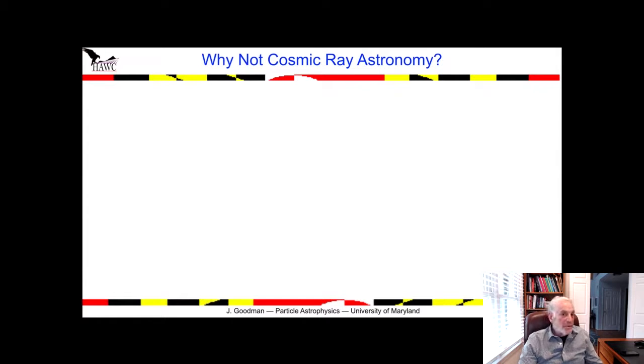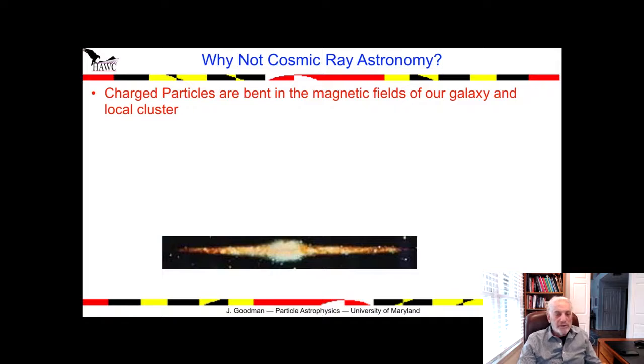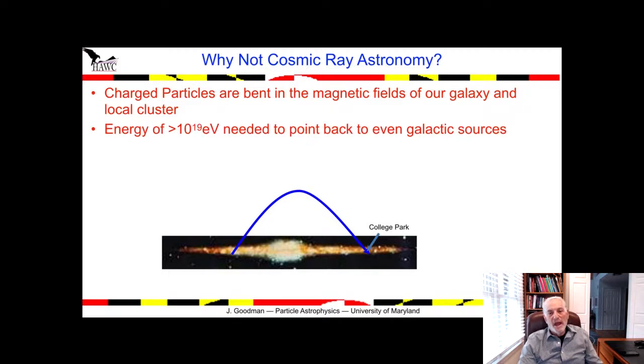Why don't we just look up in the sky and see where they come from? Well, the problem is they're charged cosmic rays and charged particles are bent in the magnetic field of our galaxy and the local cluster. If we see a cosmic ray coming toward us, we know that it isn't pointing back to the direction it came from because it's been bent by the magnetic fields. To get high enough energy so things point, it has to be significantly higher than even 10^19 electron volts. The way around this is to use neutral messengers that point back into space.